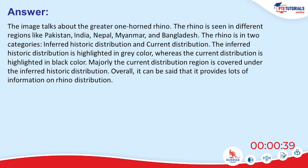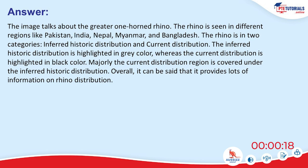The image talks about the greater one-horned rhino. The rhino is seen in different regions like Pakistan, India, Nepal, Myanmar, and Bangladesh. The rhino distribution is in two categories: inferred historic distribution and current distribution. The inferred historic distribution is highlighted in gray color, whereas the current distribution is highlighted in black. Majorly, the current distribution region is covered under the inferred historic distribution.